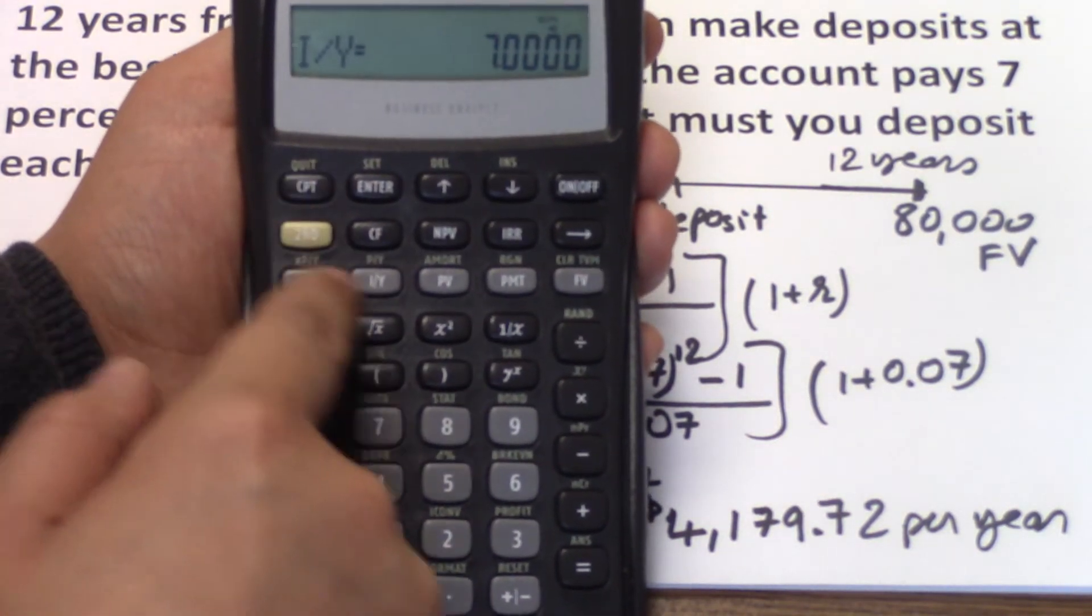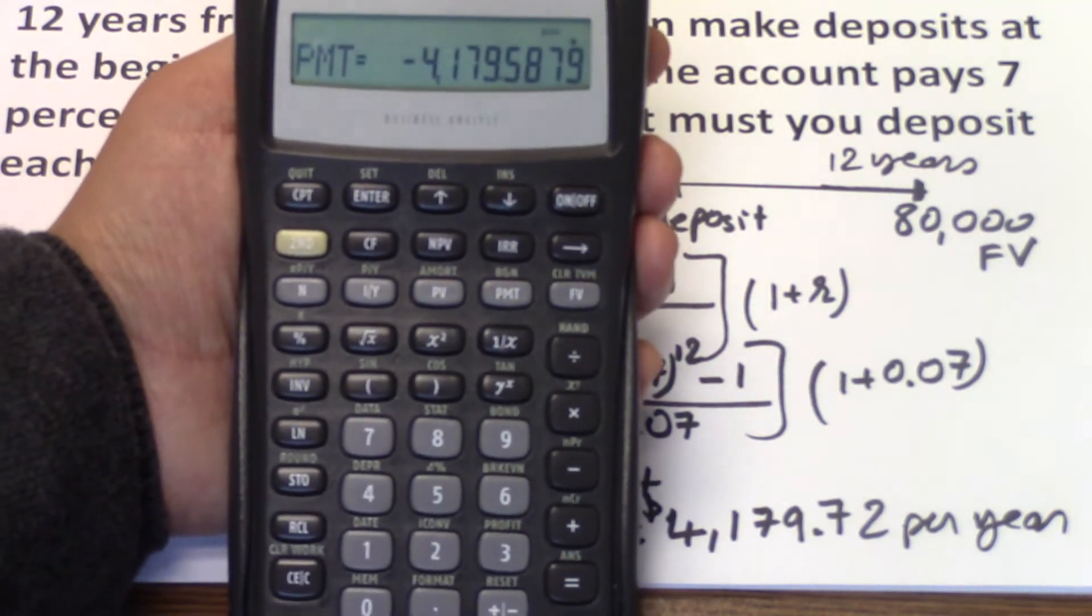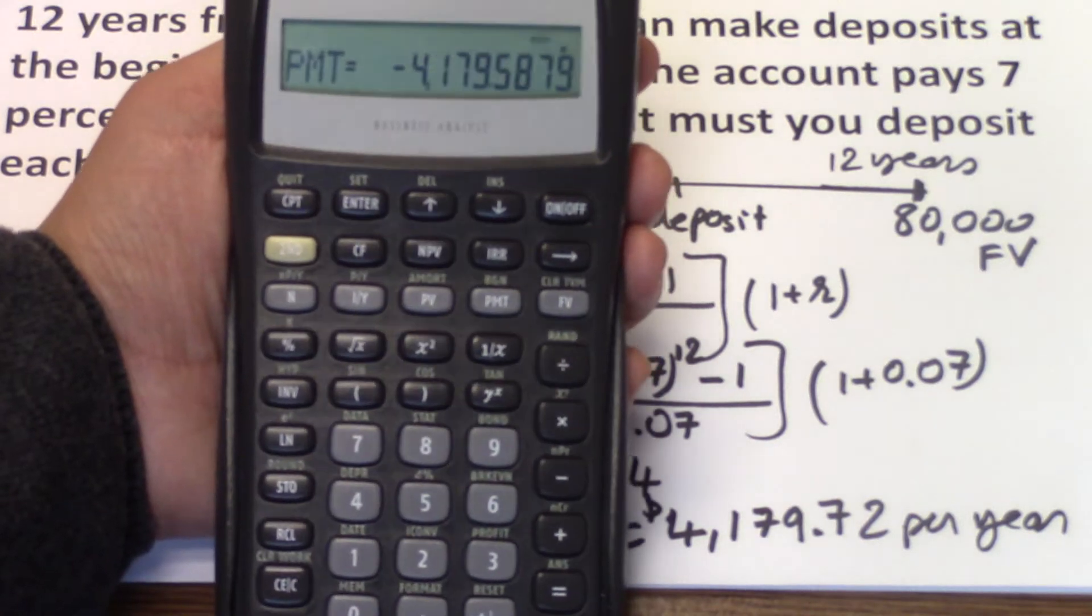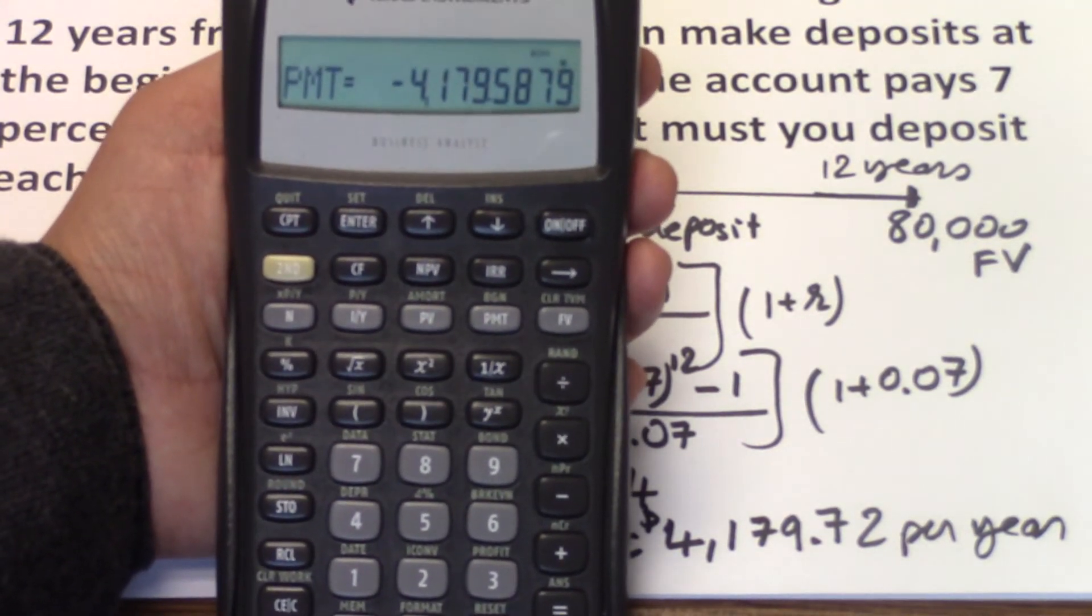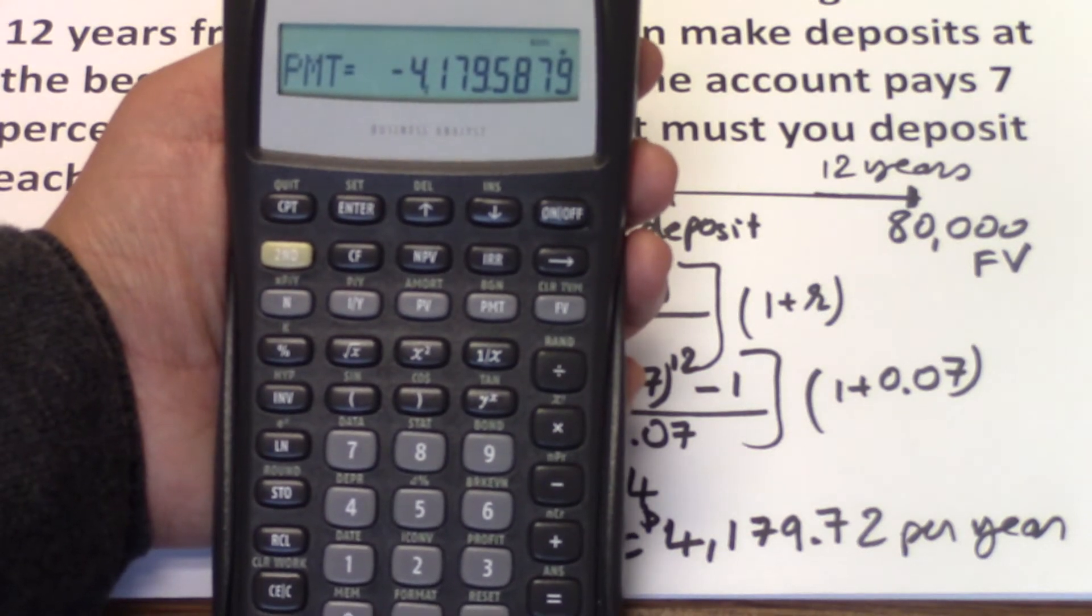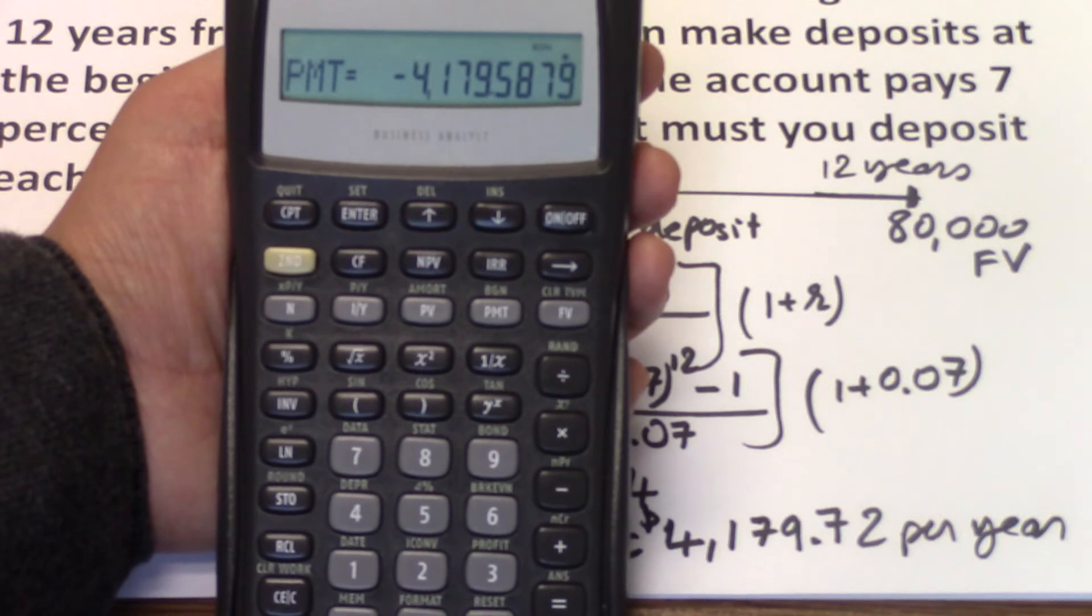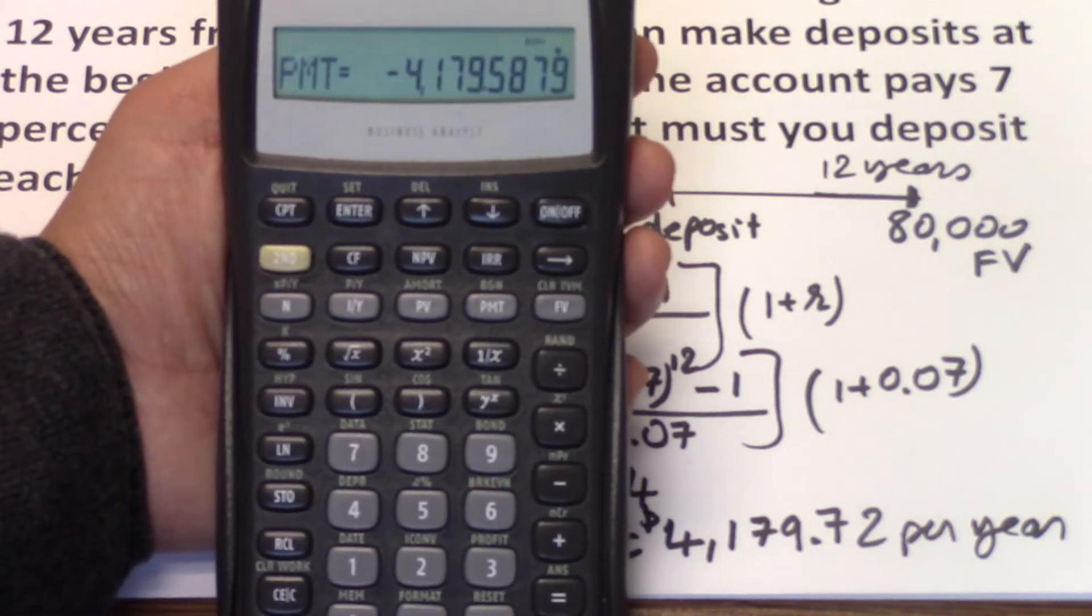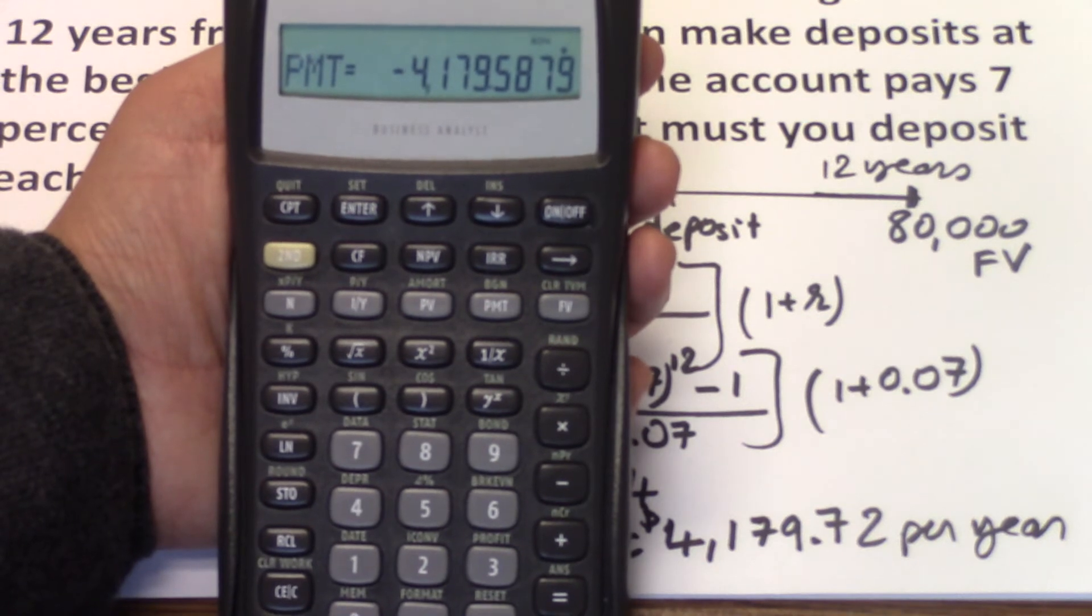And then you compute PMT. And we get $4,179.58. This is the most accurate number, really close to what we have found. It looks like a negative number because we have to invest $4,179.58 every year to be able to get to $80,000 at the end of 12 years if we invest at 7%.